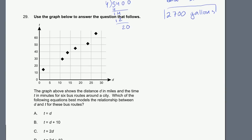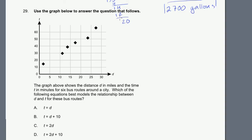Problem 29. Use the graph below to answer the question that follows. Let me switch colors to ease the monotony. The graph above shows the distance d in miles and the time t in minutes for six bus routes around a city. Which of the following equations best models the relationship between d and t for these bus routes? It's almost a line. We can see a line that looks something like that if I had to fit a line into there.